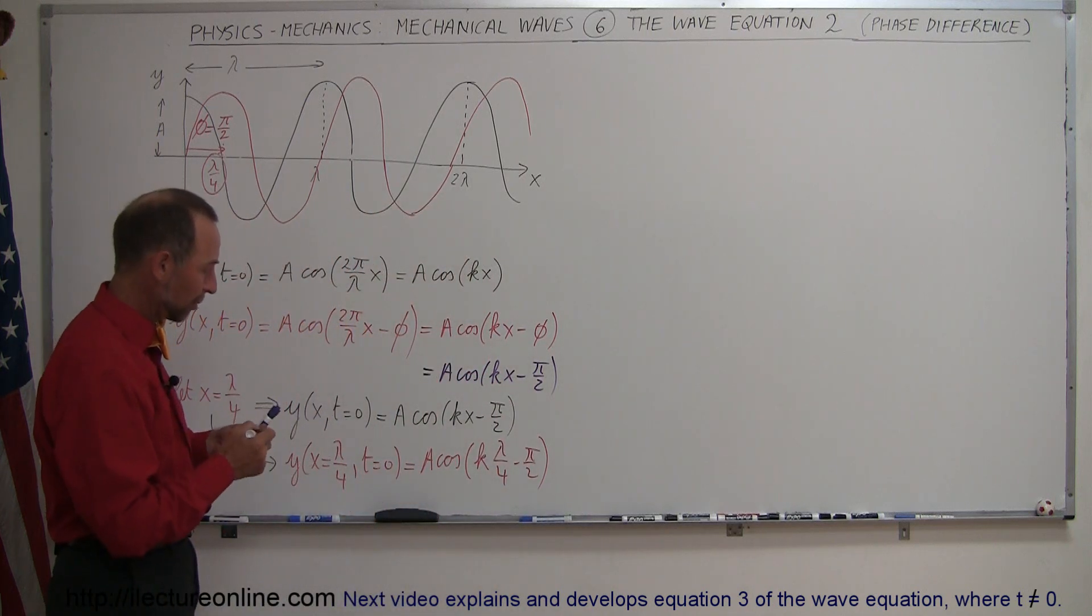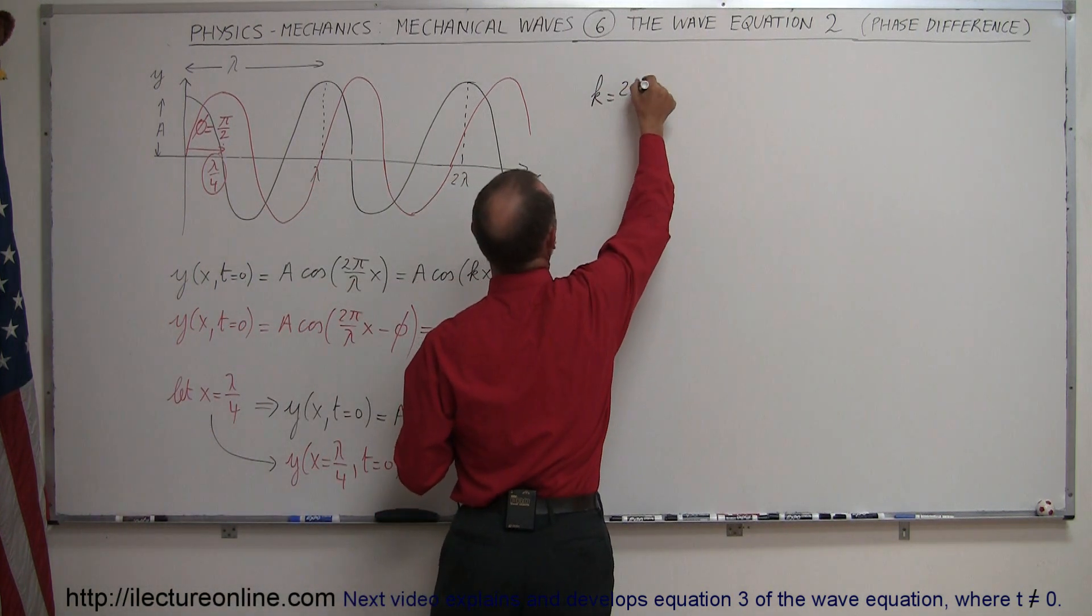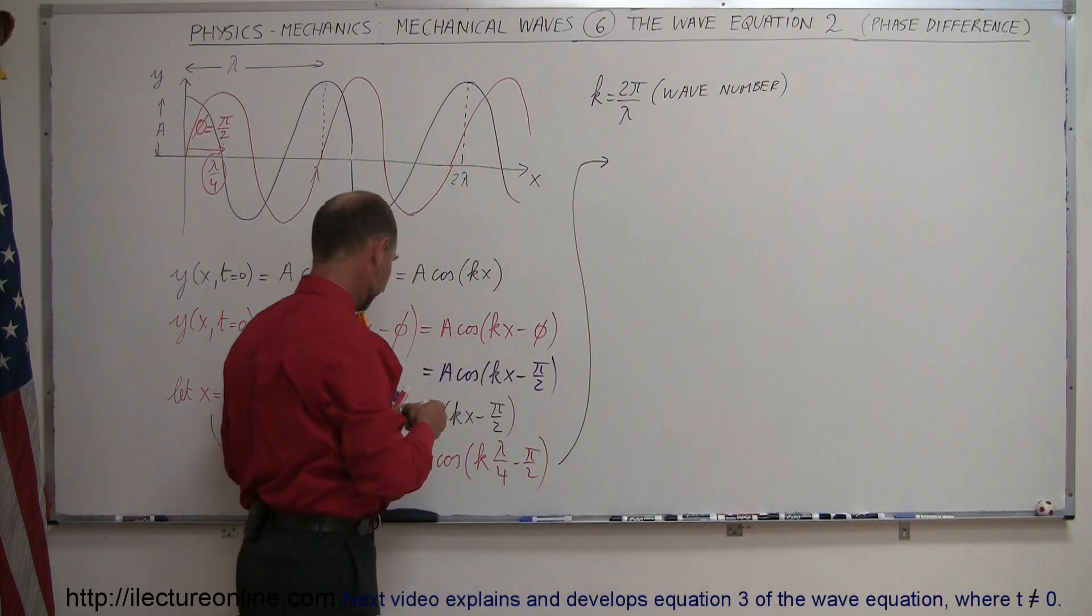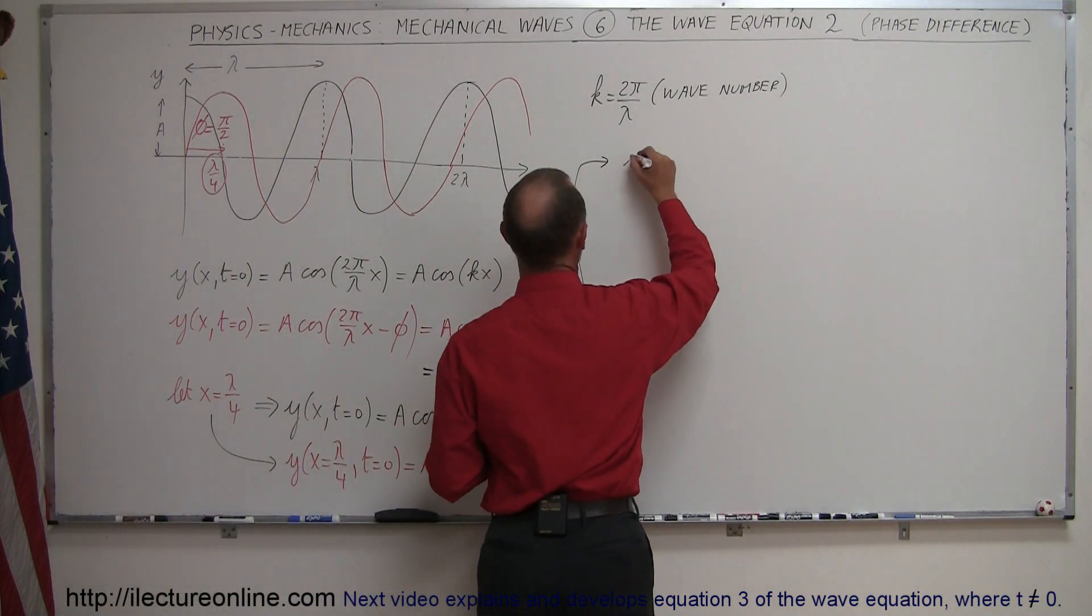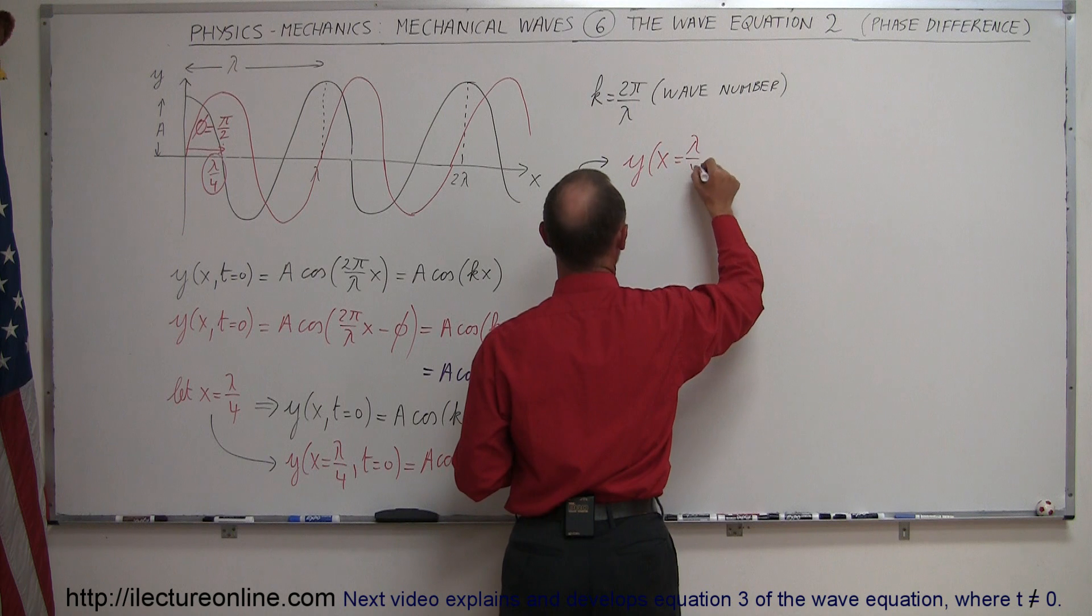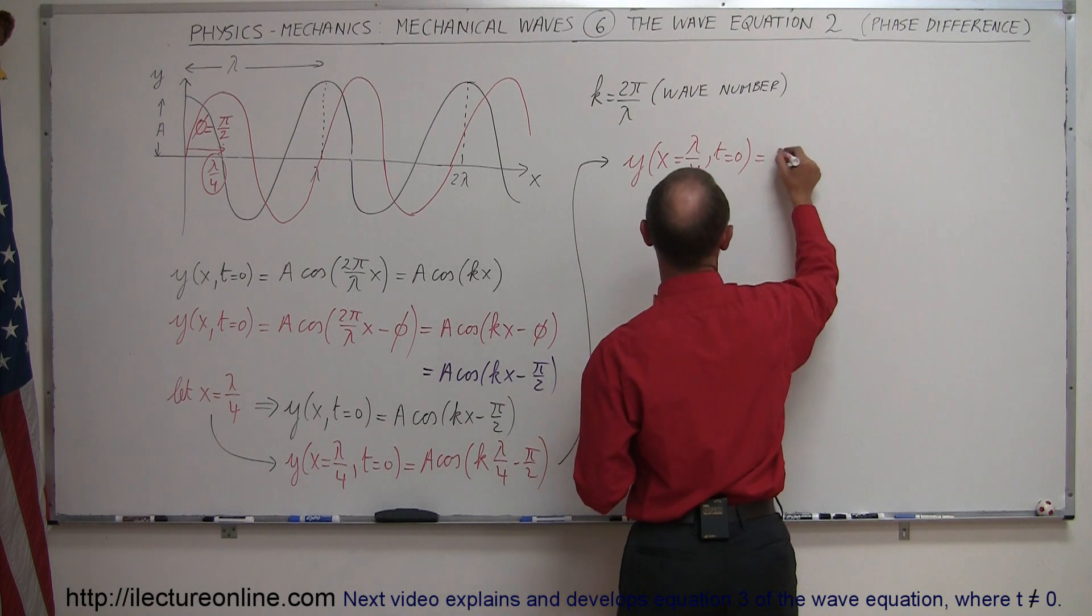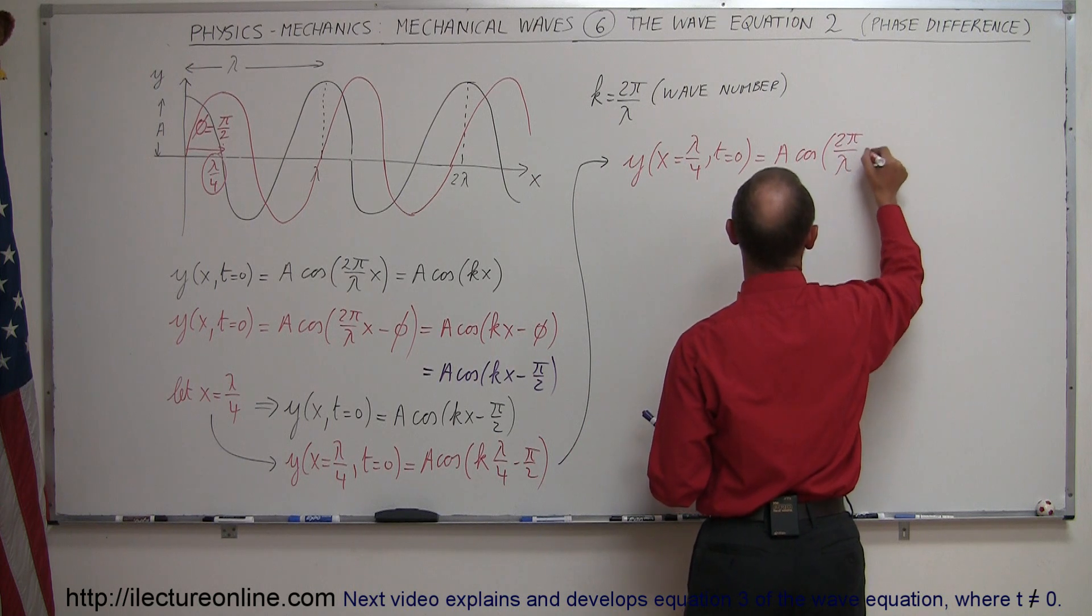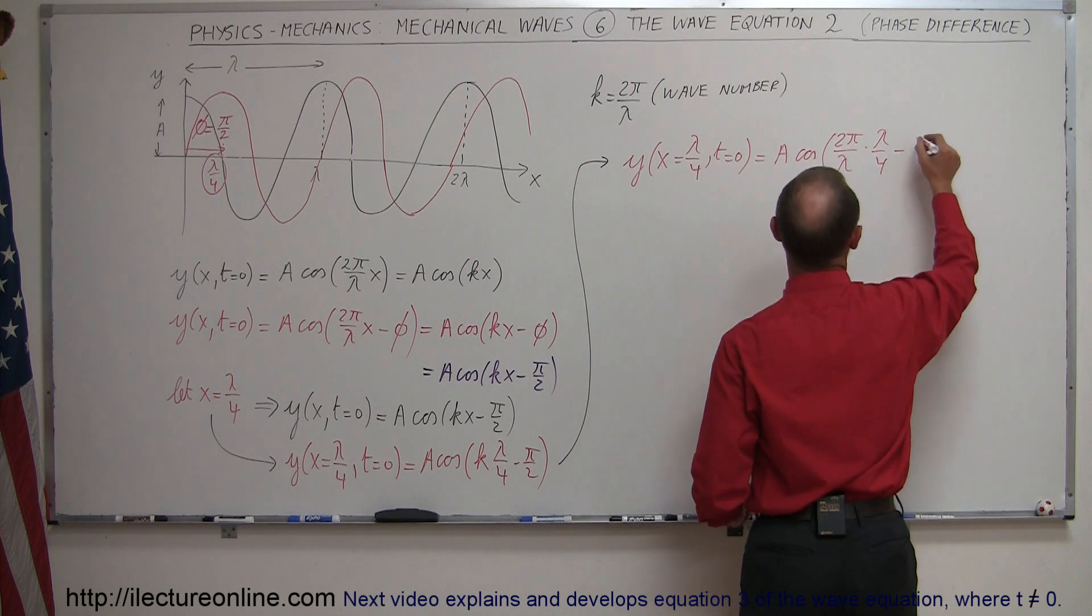Now we're going to plug in what k is equal to. Remember, and I really mean remember because this is important, that k is equal to 2 pi over lambda, which is the wave number. Let's now move this equation over here. We're going to plug in for k 2 pi over lambda and see what we get. So if y, the displacement, when x is equal to lambda over 4 and t is equal to 0, we're going to make it simple, keep time equal to 0. This is equal to a times a cosine of, instead of k, we write 2 pi over lambda. And instead of x, we write what x is equal to, which is lambda over 4 minus pi over 2.